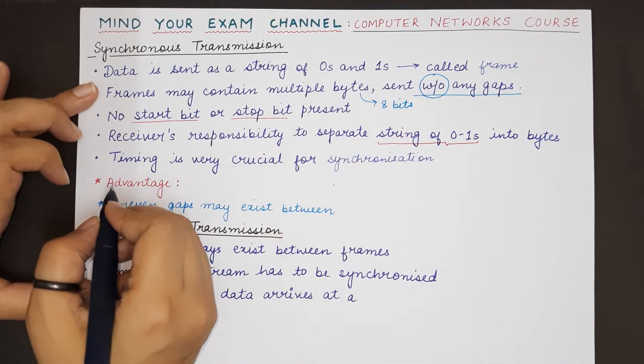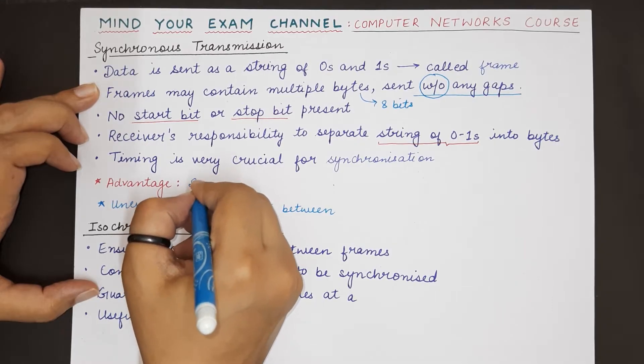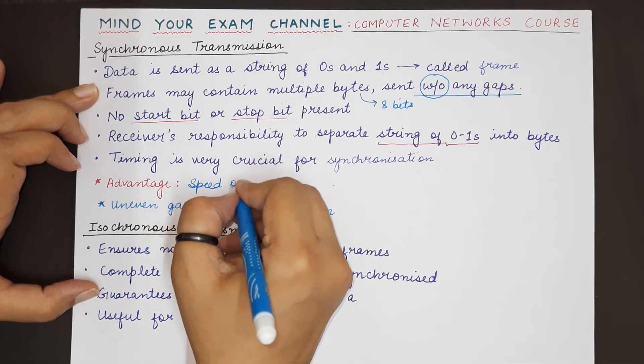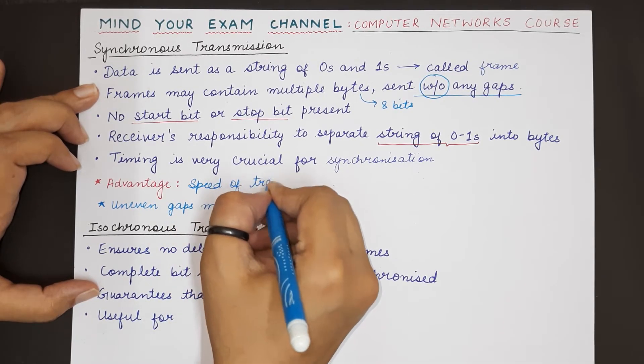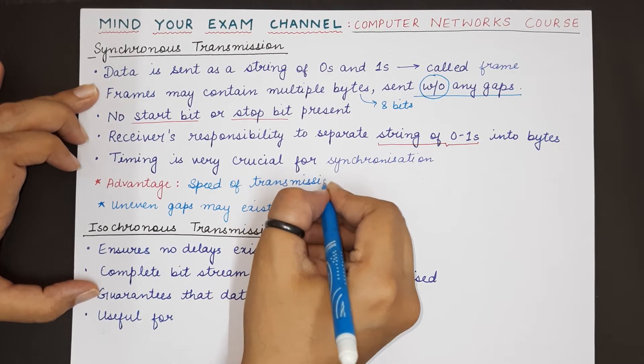The advantage of synchronous serial transmission is the speed of transmission. Since there is no gap between the bits in a frame, this transmission is very fast—faster compared